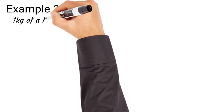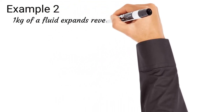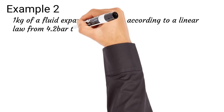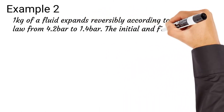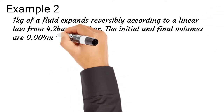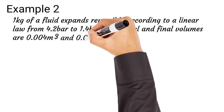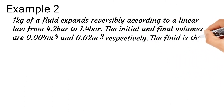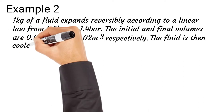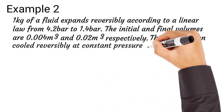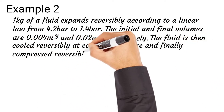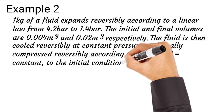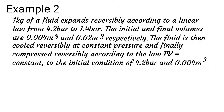Example 2. In this video — the last video was Example 1. One kilogram of a fluid expands reversibly according to a linear law from 4.2 bar to 1.4 bar. The initial and final volumes are 0.04 m³ and 0.02 m³ respectively. The fluid is then cooled reversibly at constant pressure, and finally compressed reversibly according to the law PV = constant back to the initial conditions of 4.2 bar and 0.04 m³.